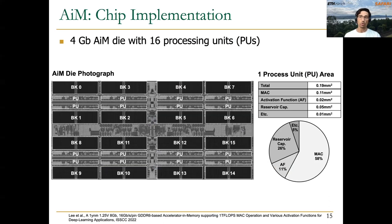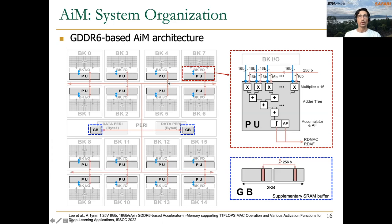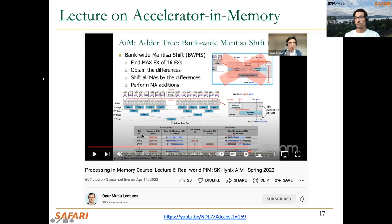In a later lecture we also discussed a similar proposal, but from SK Hynix: the Accelerator-in-Memory or AIM, based on GDDR6 memory technology. In this case, one processing unit is placed near each memory bank. The processing unit contains an array of multipliers and a reduction tree to perform reduction operations. Also notable is the existence of a global buffer used as a supplementary SRAM buffer for data movement across different processing units and memory banks. You can learn more about AIM in lecture six of this spring 2022 semester.